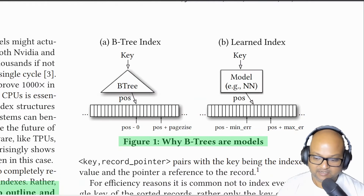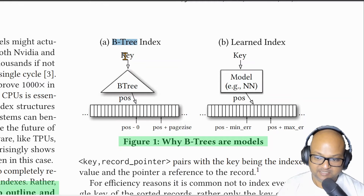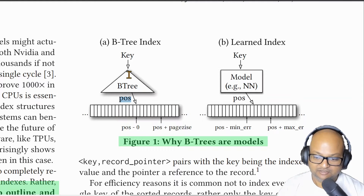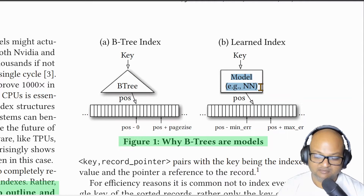This diagram illustrates the basic idea, which is that you can think of a btree as something that takes a key and then predicts its position in a sorted array. So you could take this entire btree and replace it with a machine learned model.